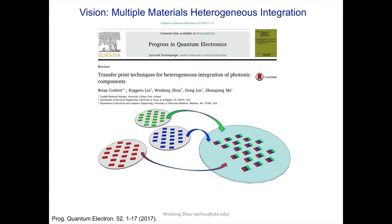The idea is: instead of transferring individual dies, we transfer functional layers. We release the nano-thin film — the functional layer, typically a few hundred nanometers to a few microns — from the substrate and transfer it onto the target device area. We do this in multiple rounds with different materials, so we can co-locate different materials on the same plane or vertically stack them. So we're looking for thin film release — more like a pick-and-place but with thin films — and multiple material integration on the same plane or stacked vertically.